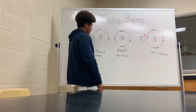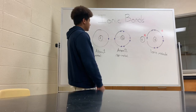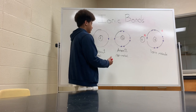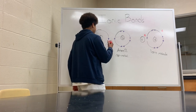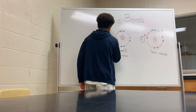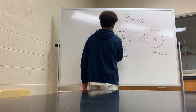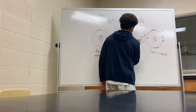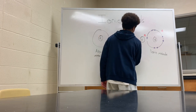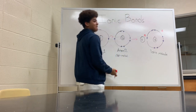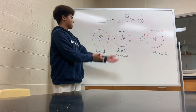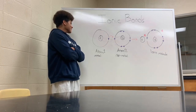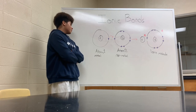Ionic bonds. Ionic bonds are when the valence electrons of one atom are transferred to another atom. Ionic bonds are always between metals and non-metals.